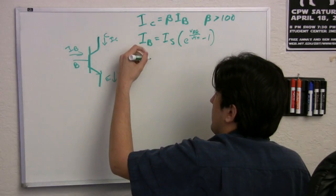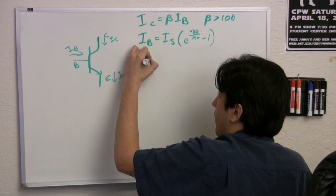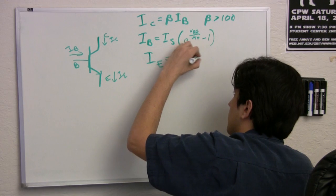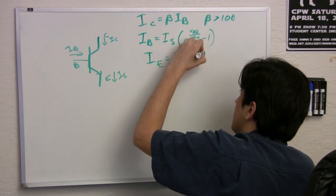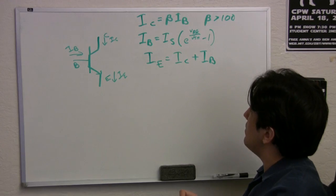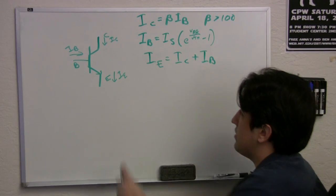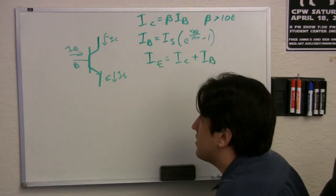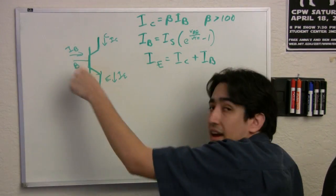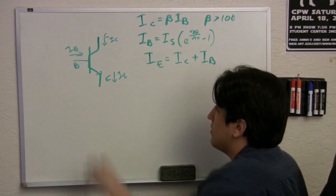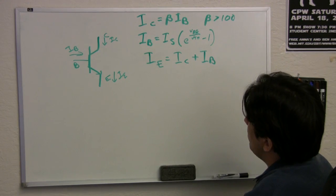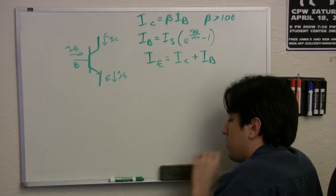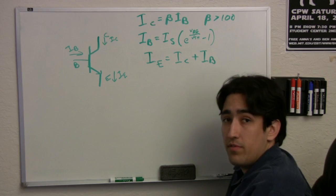And there's one more equation that I'm going to write down for you. IE is IC plus IB. This was not that hard to see where it comes from because this current is just kind of these two currents added up. That's just Kirchhoff's current law saying that current or charge can't add up inside this little device. So let's use this model and these three equations to sort of see how we can get an amplifier out of it.